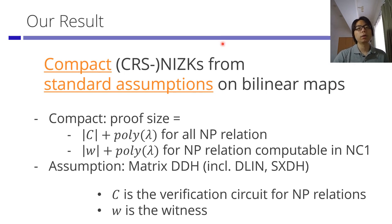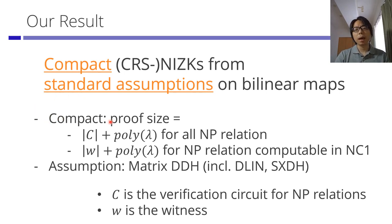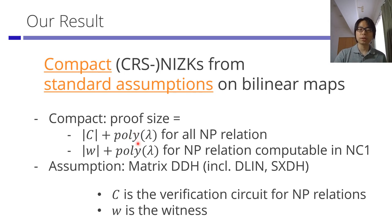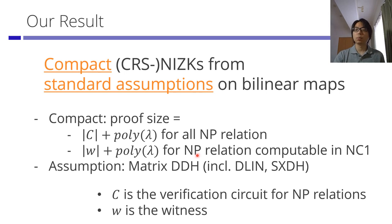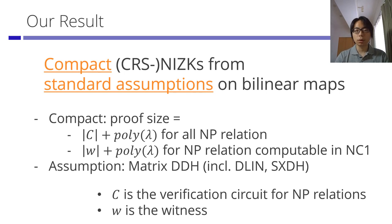Our result is a compact NIZK from standard assumptions. What we mean by compact is that the proof size is going to be circuit size plus poly-lambda for all NP relations, where the circuit is the verification circuit. If the NP relation is computable in NC1, we further get a proof size of witness size plus poly-lambda. The assumption we use is matrix DDH, which includes the special cases DLIN or SXDH.